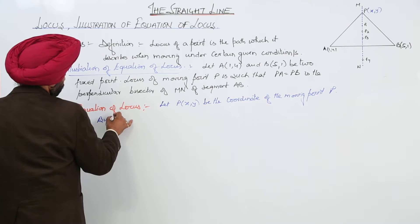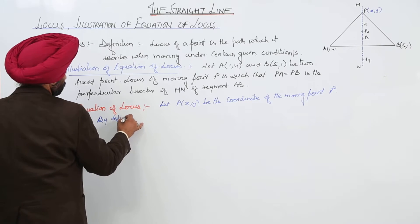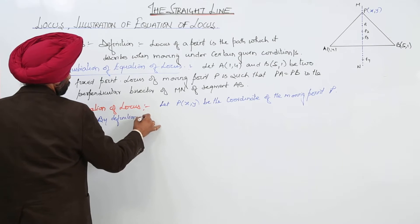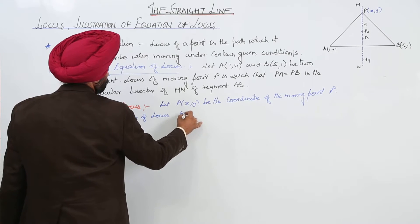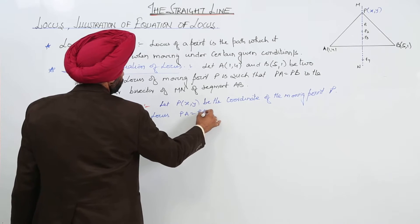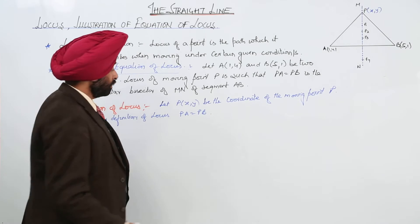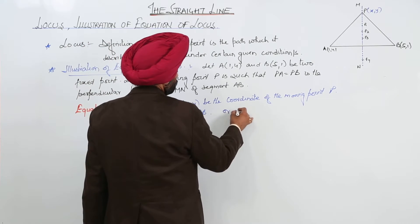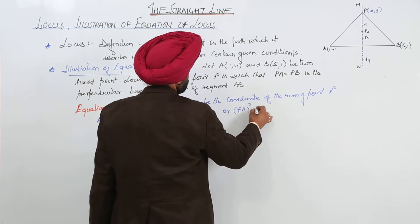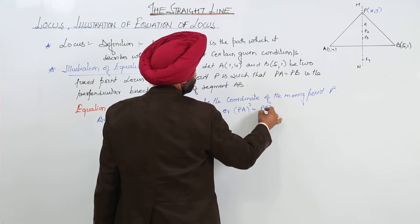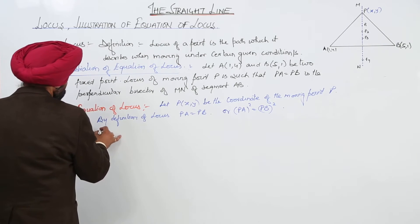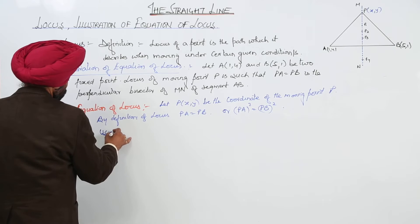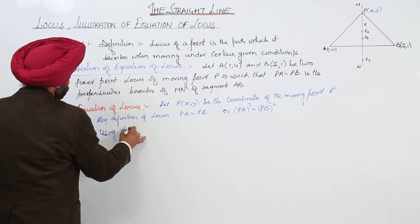Now, by definition of locus, PA is equal to PB, is it clear? Or, we can write it PA square is equal to PB square. Now, using distance formula,